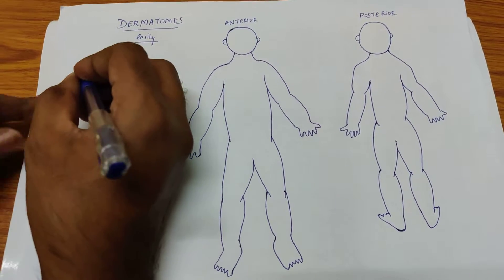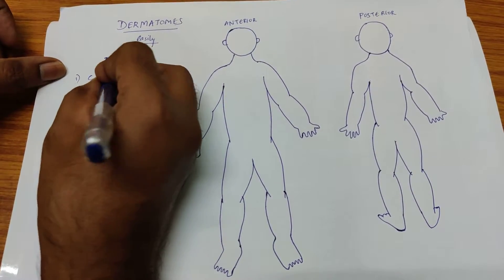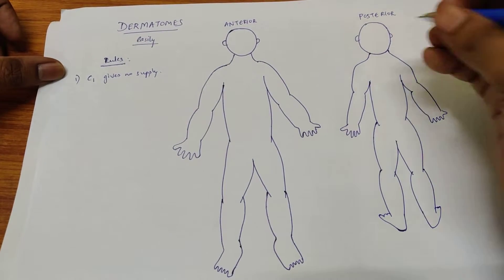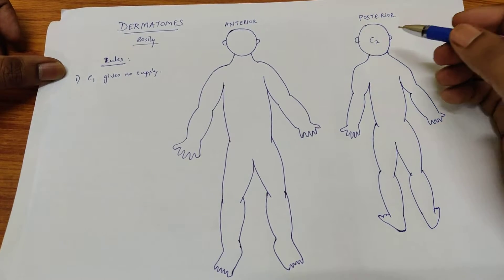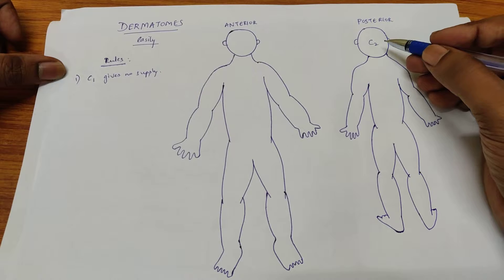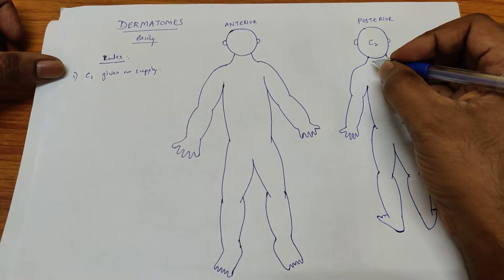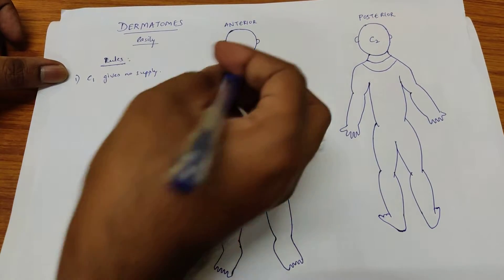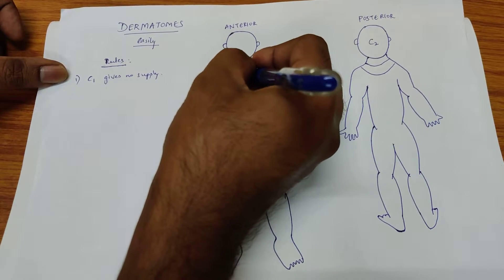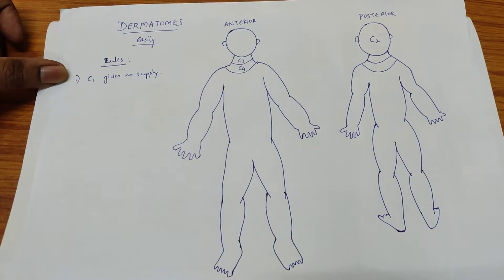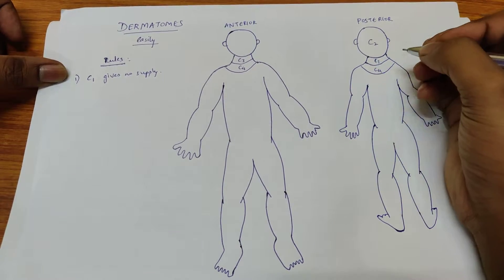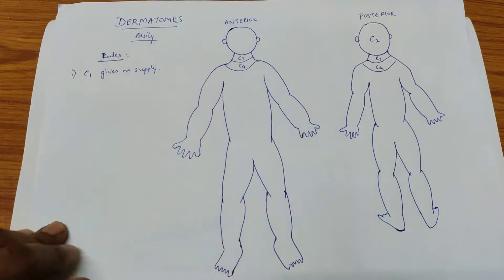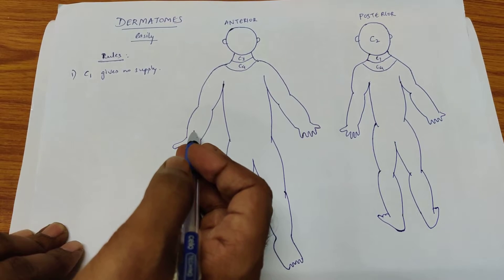The first rule is C1 gives no supply — since C1 doesn't innervate anything, the innervation starts from C2. C2 supplies the entire occiput. Then come C3 and C4, which supply the neck part. So C2, C3, C4. Then comes C5 and C6, so we'll divide the arm and forearm into two parts.